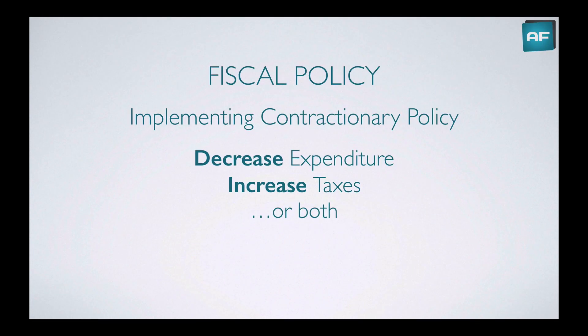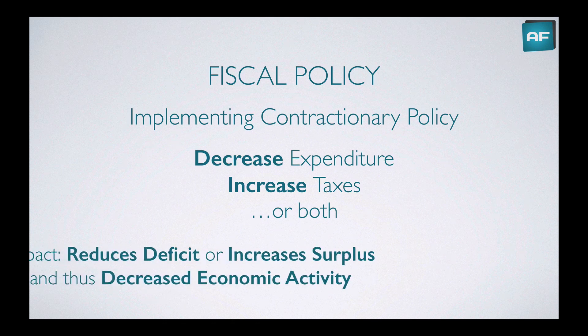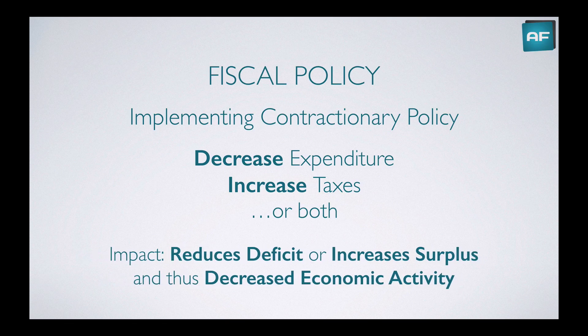The opposite applies for implementing contractionary fiscal policy. You would decrease expenditure, or increase taxes, or do both. The opposite result follows: you reduce the deficit or increase the surplus, decreasing economic activity. If the government spends less, or taxes more without a commensurate increase in expenditure, that would slow down the economy — less spending, less aggregate demand, and less economic activity.